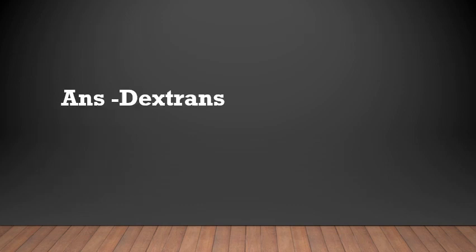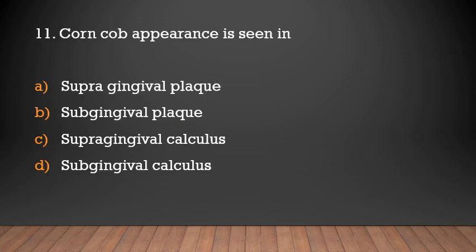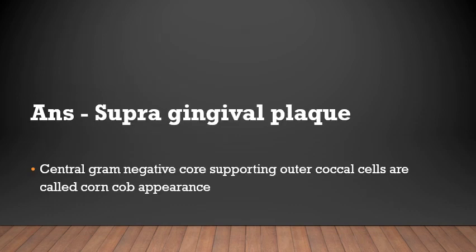Corn-cob appearance is seen in supragingival plaque. A central gram-negative core supporting the outer coccal cells is called the corn-cob appearance, and it is a feature of supragingival plaque.